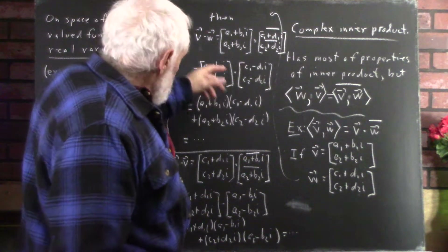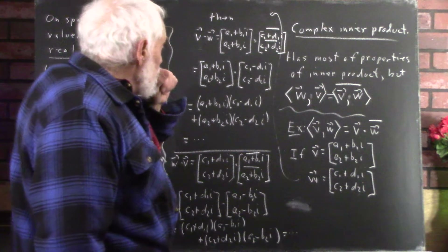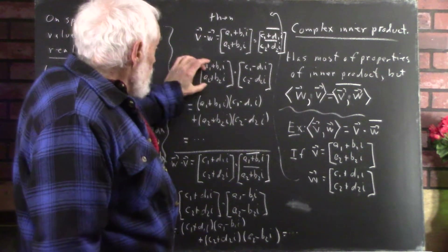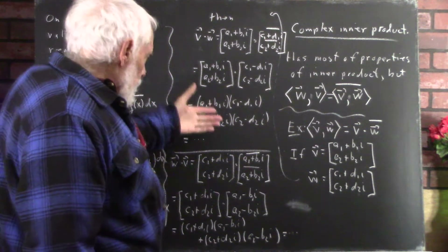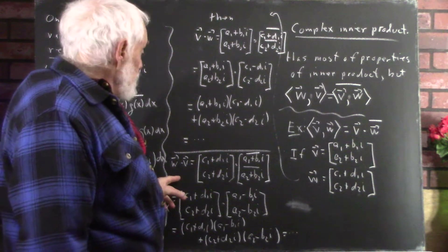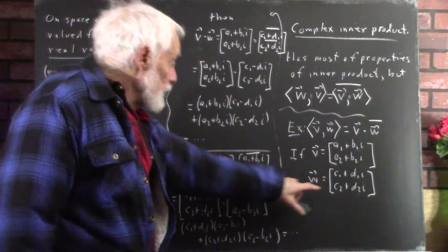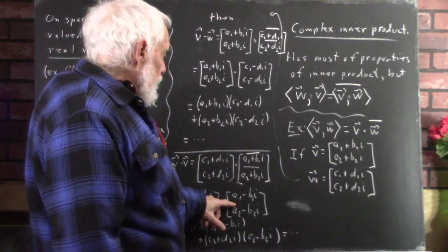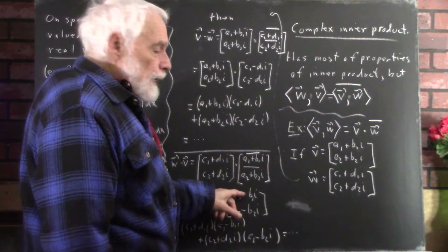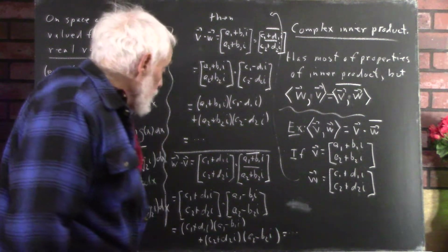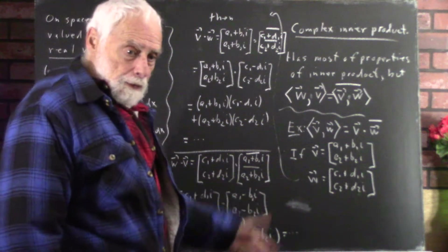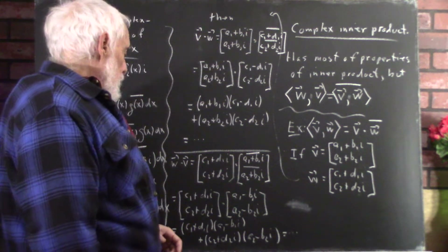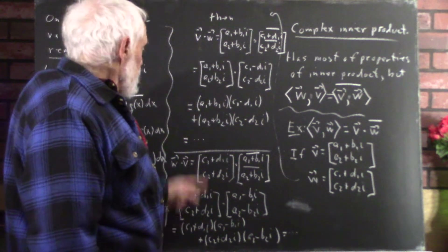We just do the standard dot product: this times this, plus this times this — it's clear what we get. For W dot V, we have the W vector dotted with the complex conjugate of V, so now V is the one with negatives on the imaginary components. We can verify that ⟨V,W⟩ is the complex conjugate of ⟨W,V⟩ by expanding the products — and you should do that.